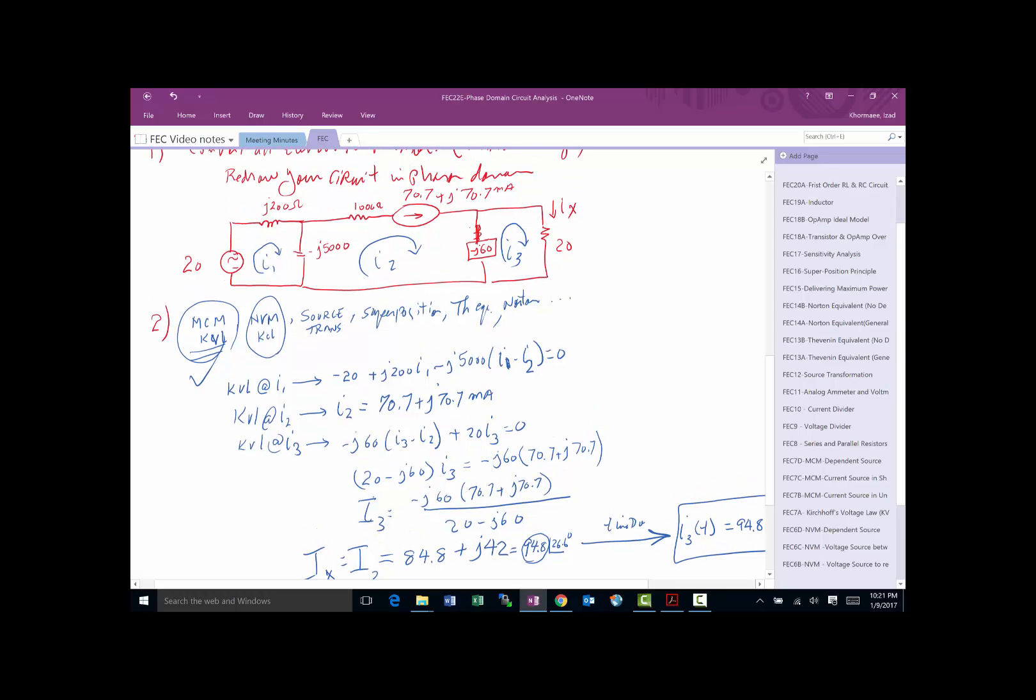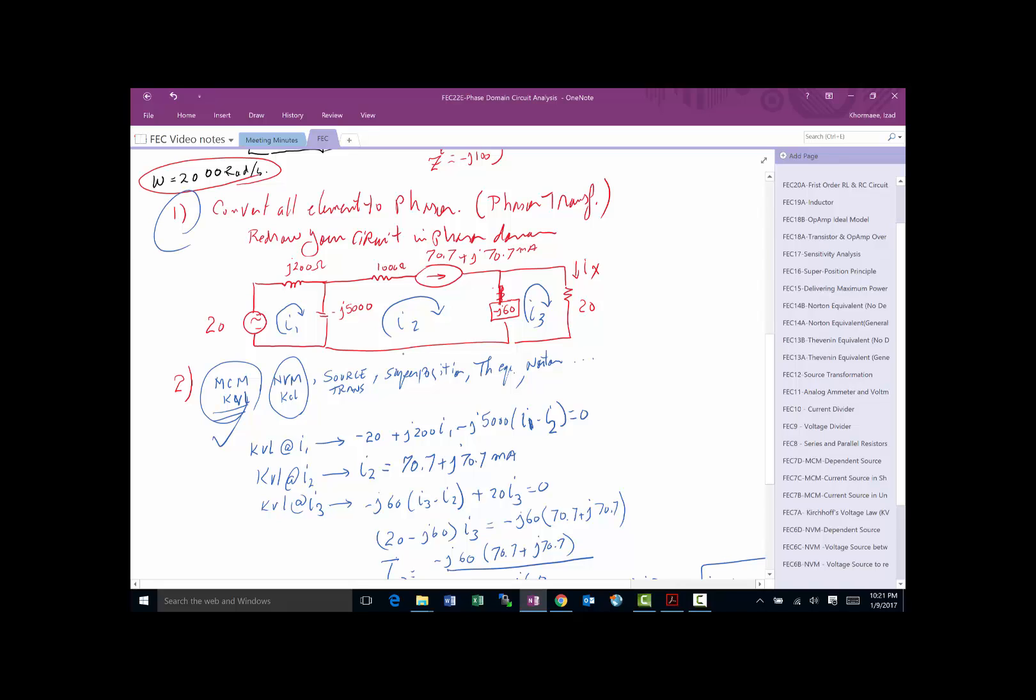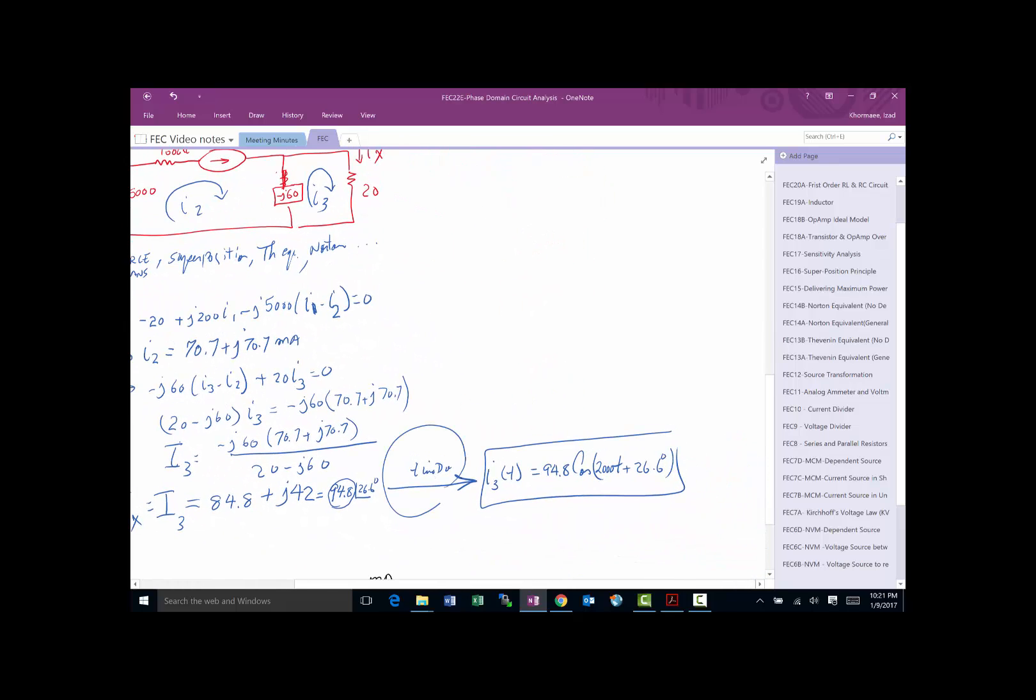Just remember there's three steps that you have to follow. Step one: you got to convert everything to phasor. Second: decide which one of the techniques you're going to apply. And finally, if they need the answer in time domain, you find the answer in phasor domain and then you got to convert it back. That brings us to the end of this video.